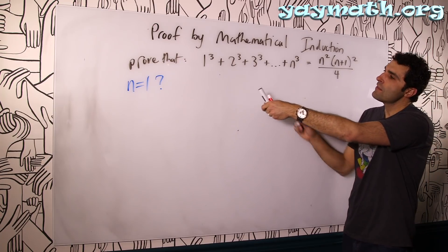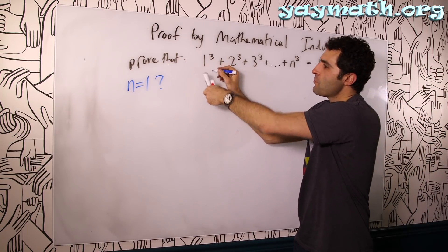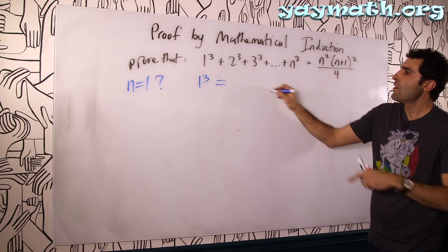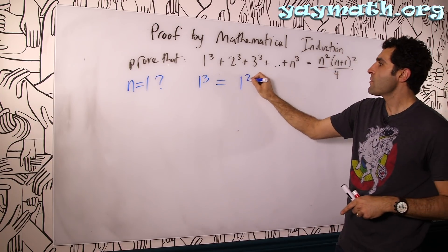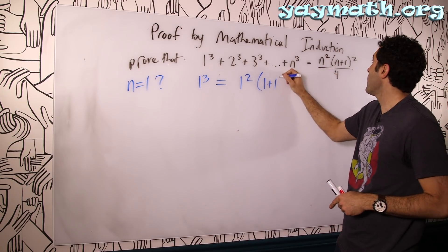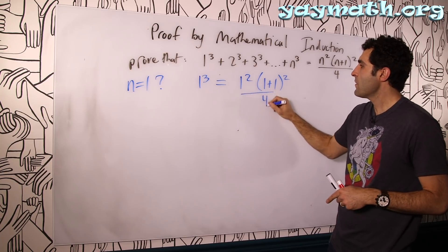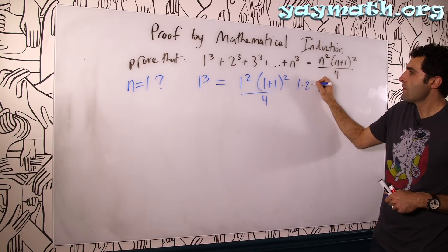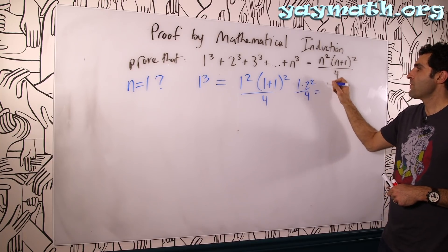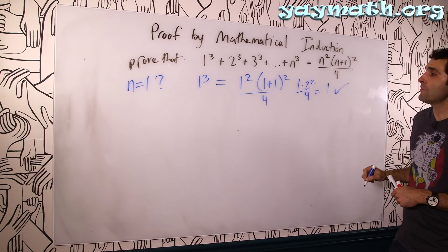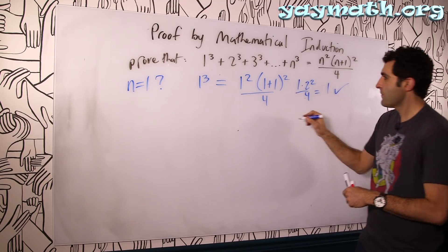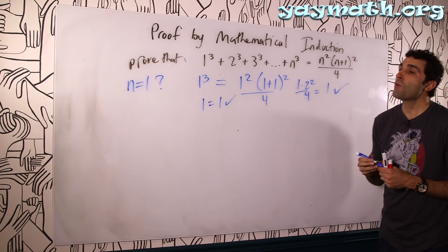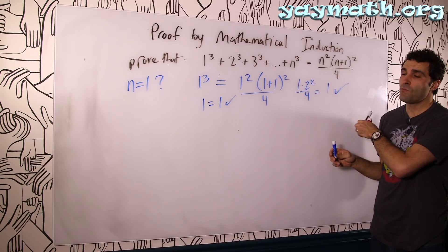For n equals 1, the left side is just 1 cubed, which should equal 1 squared times (1 plus 1) squared over 4. That's 1 times 2 squared over 4, which equals 4 over 4, which is 1. The left side is also 1. So 1 equals 1 — it's true for n equals 1.